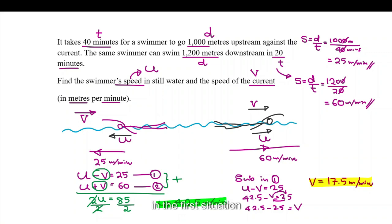Now, we know in the first situation, U take away V should give you 25. So, what's my U now? 42.5 take away V is 17.5, 0, 12 take away 7 is 5, 3 take away 1, 25. See, that one works. Let's check the other one as well.